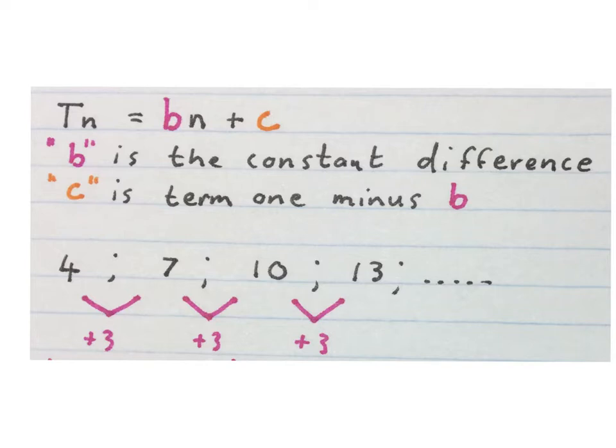A linear number pattern has a constant first difference, which means to get the consecutive terms you add the same amount or minus the same amount from each term to get the consecutive terms in that sequence.